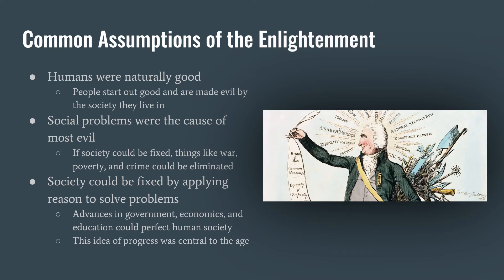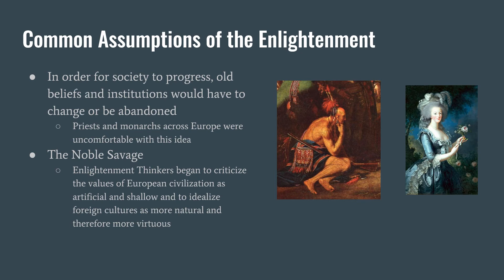This was the Age of Reason, so Enlightenment thinkers believed we could fix society by applying reason to solve social problems. If we could advance government, economics, and education by applying reason and science to them, then we could fix human society and eliminate the terrible things that characterize it. This idea of progress — that reason could make life better and better — was central to the Enlightenment. These ideas led thinkers to the conclusion that old beliefs and institutions, things like absolute monarchies and the Catholic Church, would have to change or be abandoned. Priests and monarchs across Europe were very uncomfortable with this idea, because it threatened their absolute power.